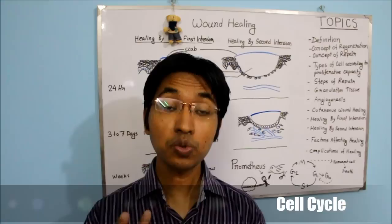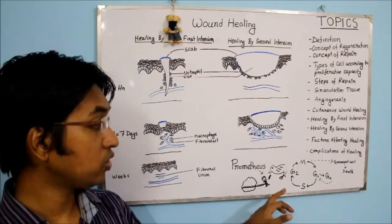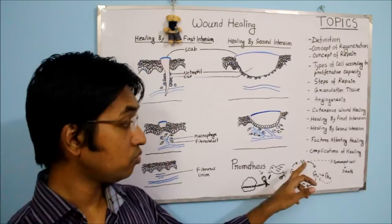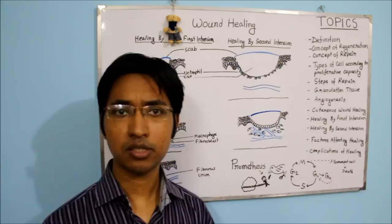The cell cycle can be defined as the period between two successive cell divisions. As you can see, I have drawn a simplified image of the cell cycle. Notice it has mainly four phases with unequal duration: M, G1, S, and G2 phase.